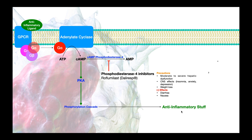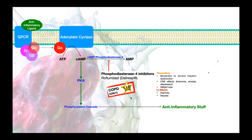Precautions for PDE4 inhibitors include moderate to severe hepatic dysfunction, excessive weight loss, and central nervous system effects like insomnia, anxiety, and depression, as well as nausea and diarrhea. These drugs are not used in the treatment of asthma — they are only used in COPD, primarily for symptom management. Since there is no cure for COPD, by inhibiting inflammation and promoting anti-inflammatory processes, we can help control and modulate some of the symptoms seen in COPD.